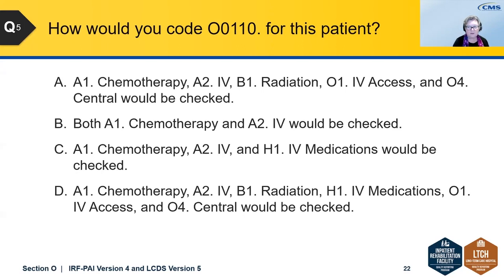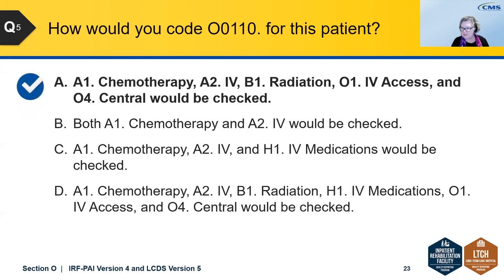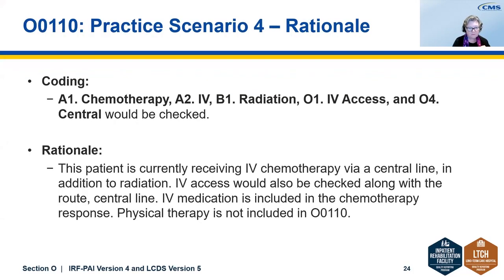Most of you answered D. However, the correct answer is A: A1 chemotherapy, A2 IV, B1 radiation, O1 IV access, and O4 central would be checked. The rationale is that the patient is receiving IV chemotherapy via a central line in addition to radiation. The IV access would also be checked along with the central line route. IV medication is included in the chemotherapy response, so you would not check IV medication separately. Physical therapy would not be included since it is not a choice in this item.